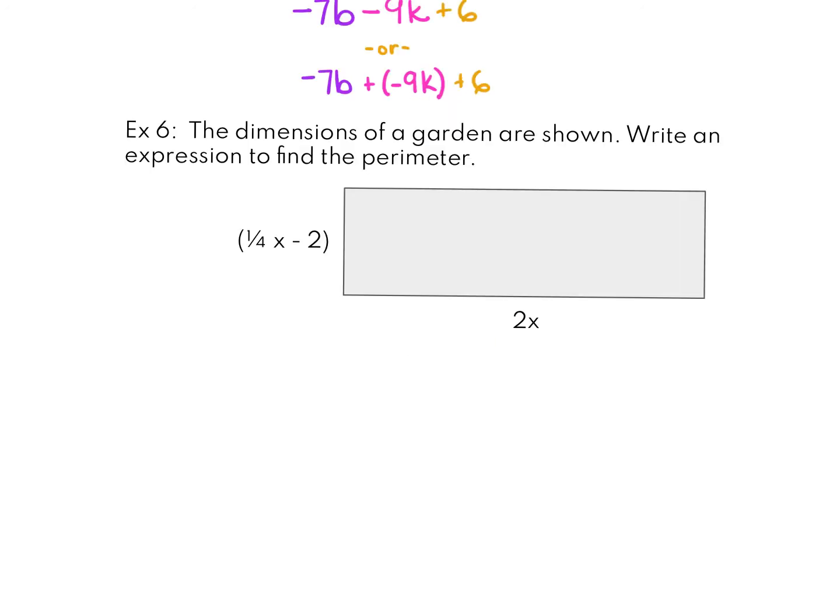For the last example, the dimensions of the garden are shown below. Write an expression to find perimeter. First thing is perimeter is the sum of all the sides. So the first thing I'm going to do is I'm going to label all the sides. So we have another 2x here and then we have 1/4 x minus 2 here. We can add all these up. So I have 2x plus 1/4 x minus 2 plus 2x plus another 1/4 x minus 2.